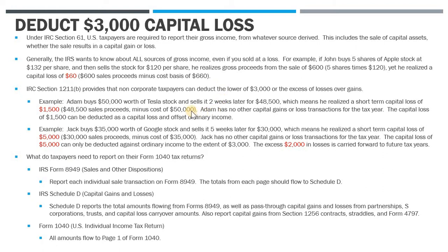Adam buys $50,000 worth of Tesla stock and sells it for $48,500, so he has a $1,500 short-term capital loss. He has no other capital gains or loss transactions for the year. Under Section 1211(b), he can deduct this $1,500 capital loss against his ordinary income because it falls underneath the $3,000 threshold.